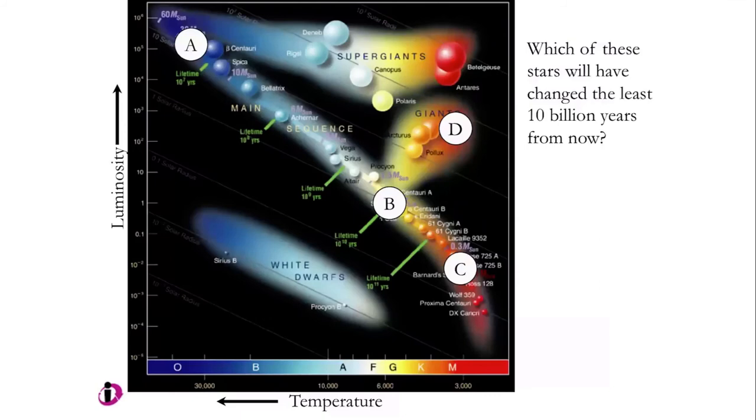Okay, so here's some questions, some more questions for you. We've got three stars here, four stars here, three on the main sequence and one on the giant branch. Which of these stars will have changed the least 10 billion years from now, do you think? I've even got the lifetimes over here so you can see on the main sequence. 10 to the seven is 10 million, 10 to the nine is a billion, 10 to the 10 is 10 billion. Which of these do you think will be changed the least 10 billion years from now?